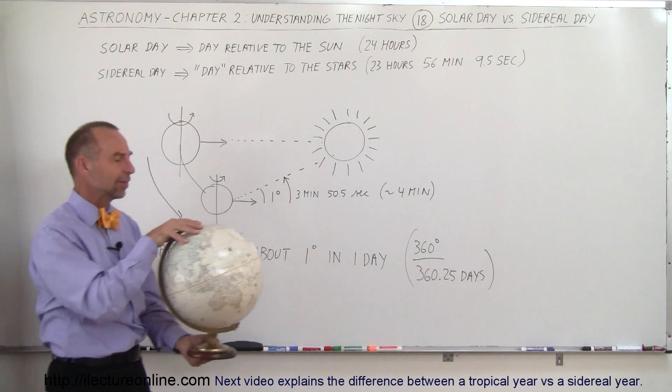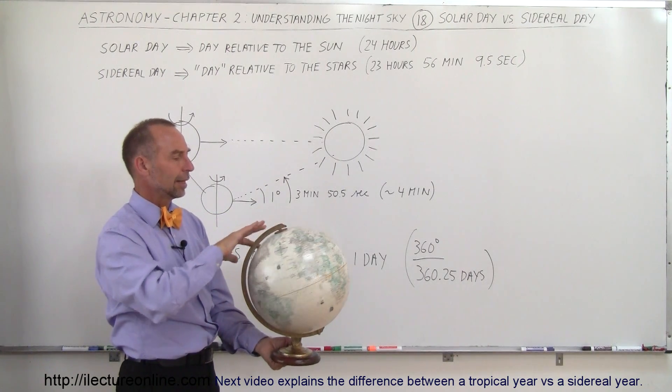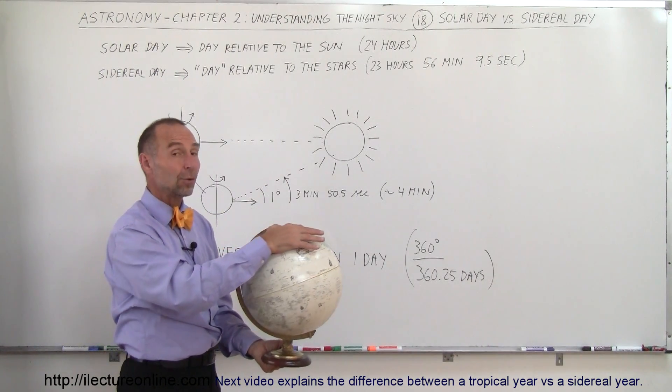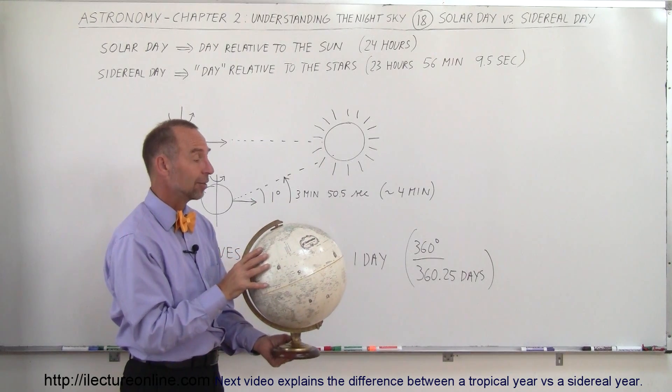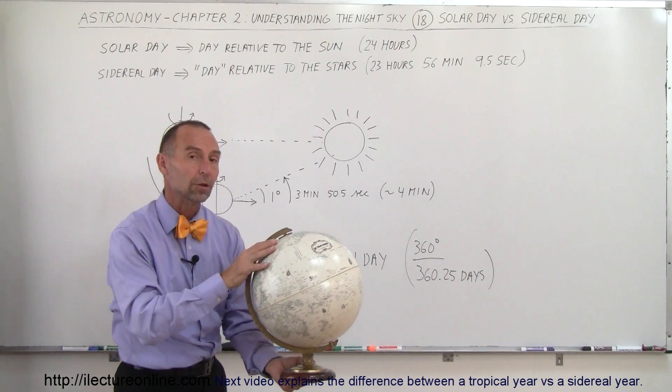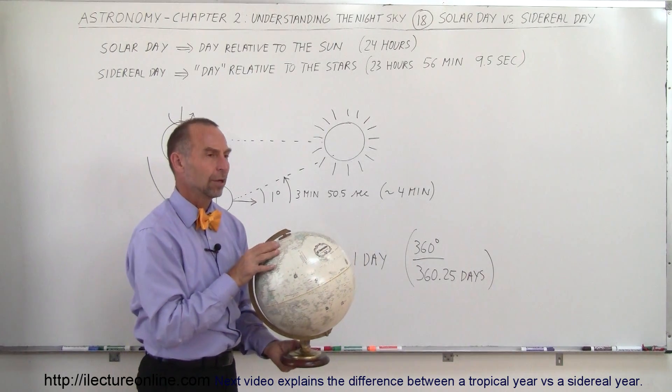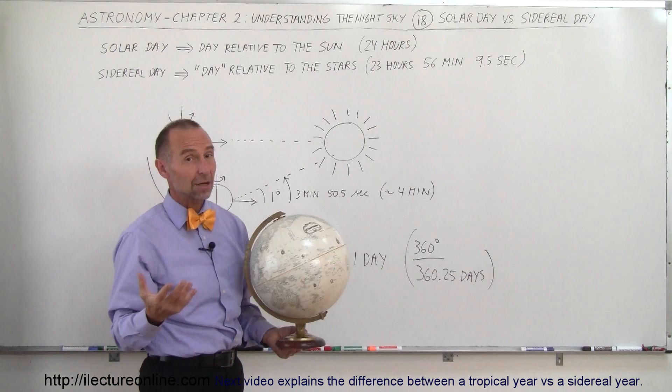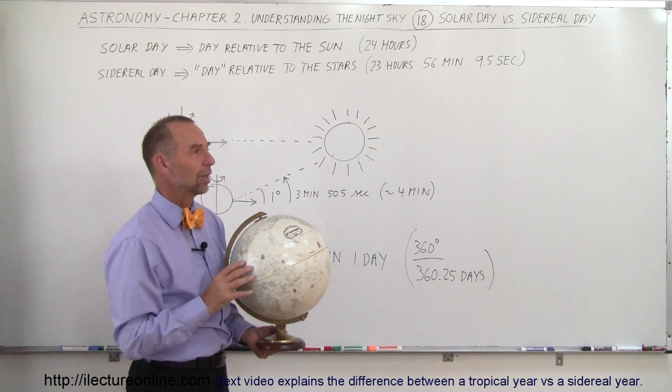And so what happens is, the Earth makes one complete rotation on its axis in 23 hours, 56 minutes, and 9.5 seconds. But during that very same time, the Earth will have moved in its orbit a certain distance because the Earth goes around the Sun once every year, once every 365.25 days.